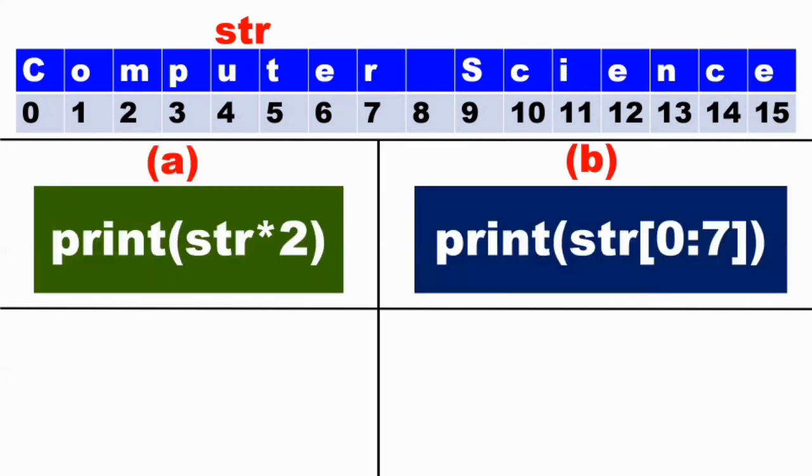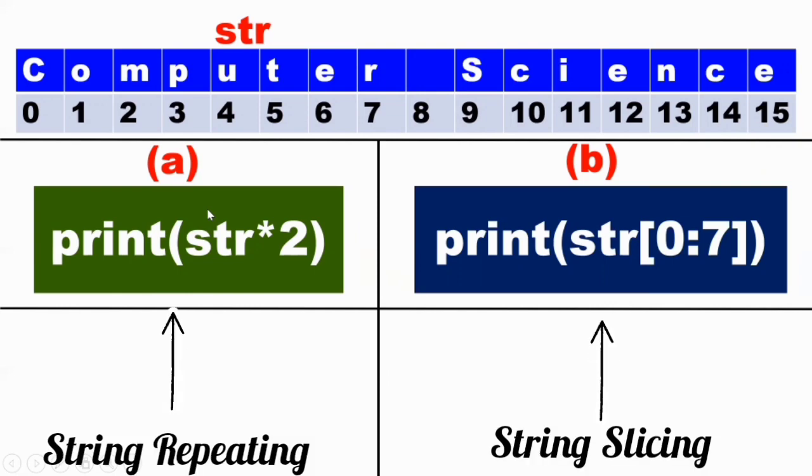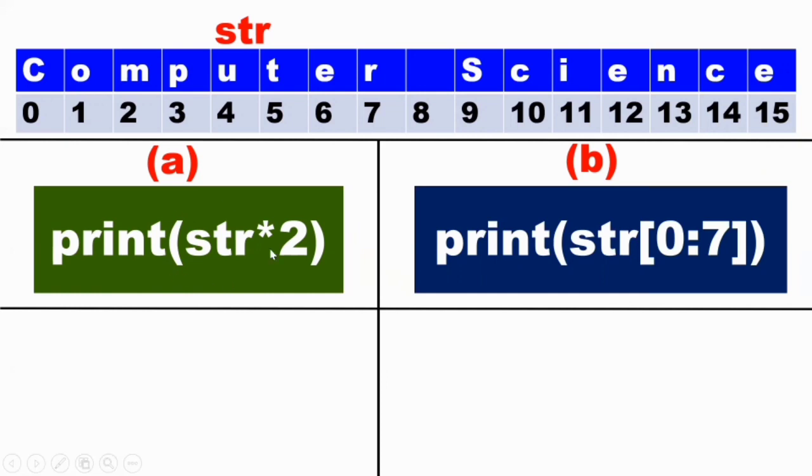Option A is the first question: Print STR star 2. This is the concept of string repeating. What do you do? The string is repeated. Star means repeat.